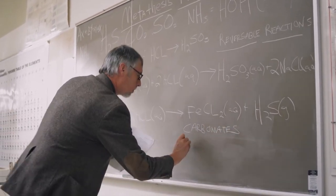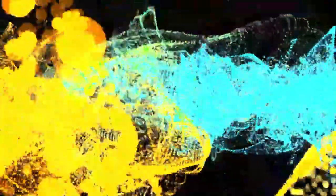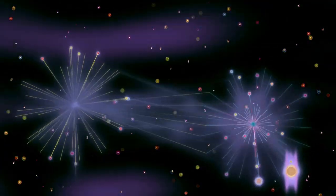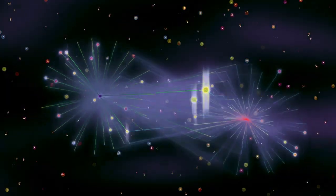Then there's the Higgs field, which Tong compares to molasses spread throughout the universe. The Higgs field gives mass to other particles, stopping them from moving at the speed of light. Tong notes that this comparison is not perfect because it suggests friction, while in reality, different particles interact with the Higgs field in various ways.